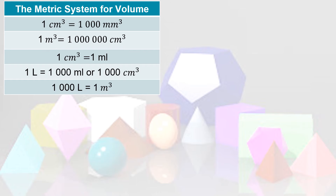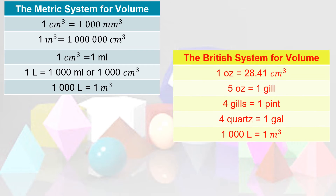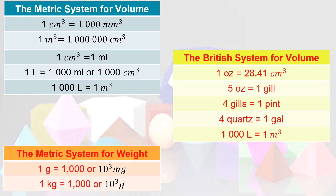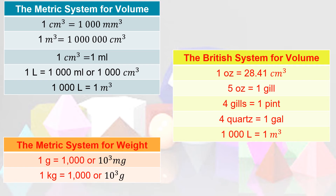We have different systems for measuring volume. There is the metric system for volume, the British system for volume, and the metric system for weight. We will use these equivalences later on.